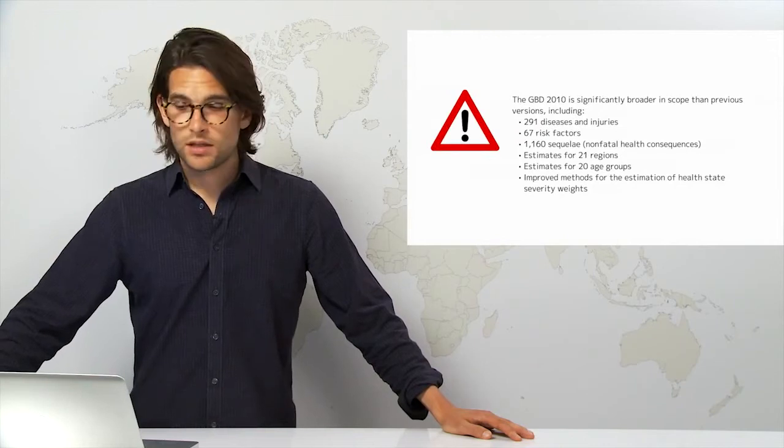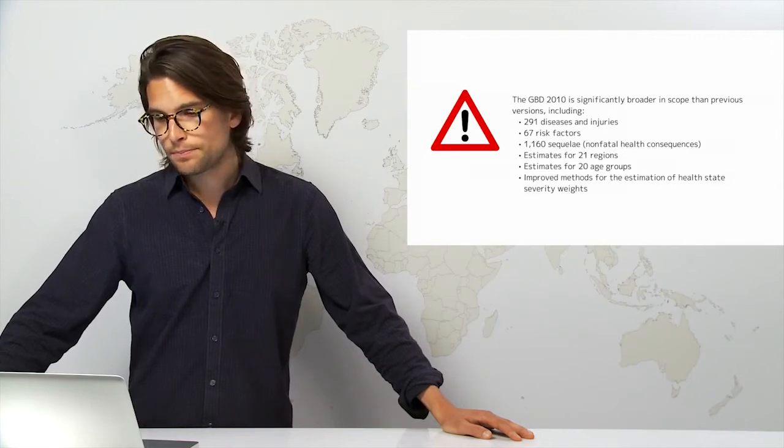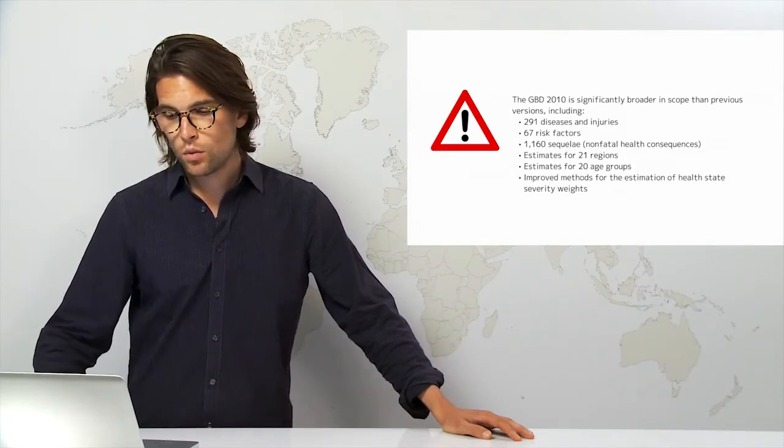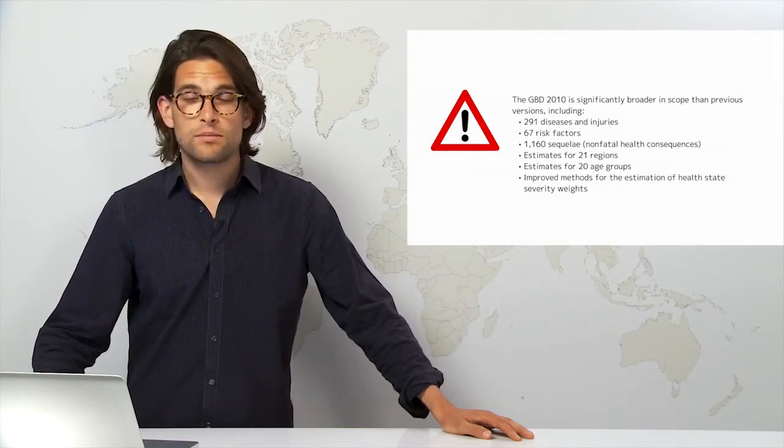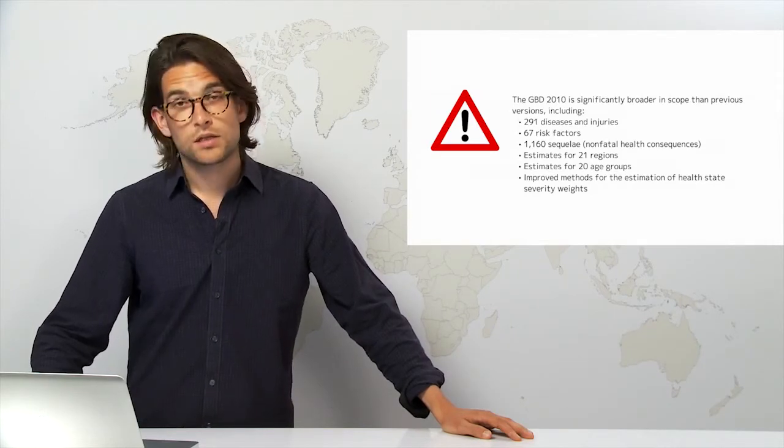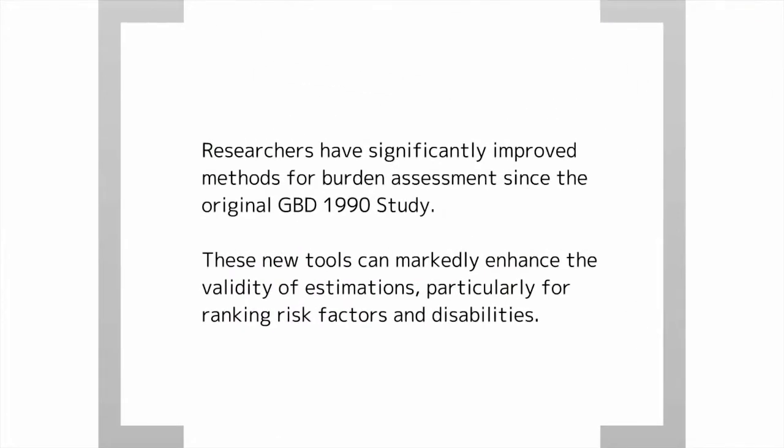The global burden of disease 2010 is significantly broader in scope than the previous versions, particularly 1990. It includes 291 diseases and injuries, 67 risk factors, 1,160 non-fatal health consequences, estimates for 21 regions, estimates for 20 age groups, and it uses improved methods for the estimation of health state severity weights. Researchers have also significantly improved methods for burden assessments since the original global burden of disease study in 1990, and so these new tools can markedly enhance the validity of estimations, particularly for ranking risk factors and disabilities.